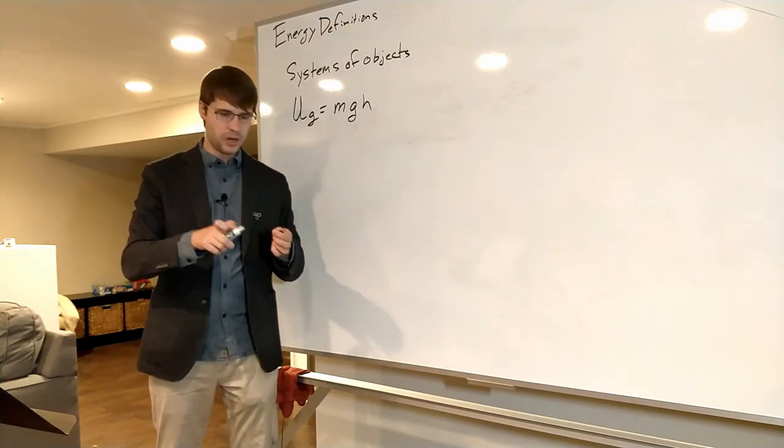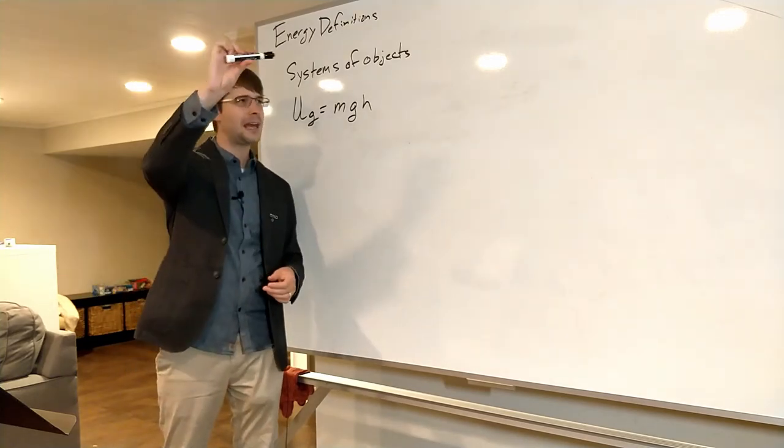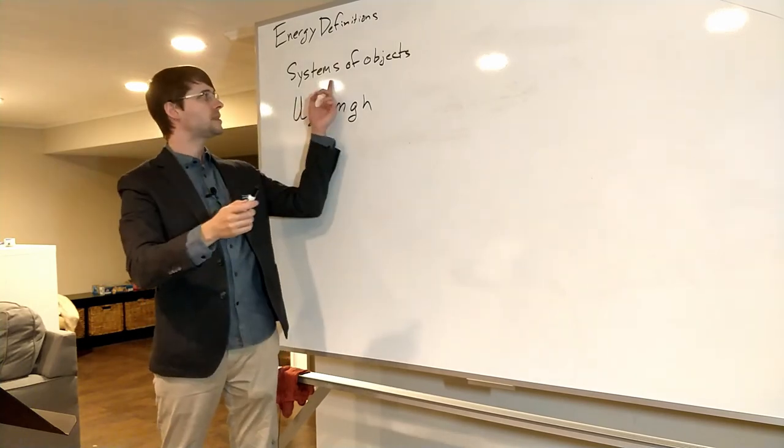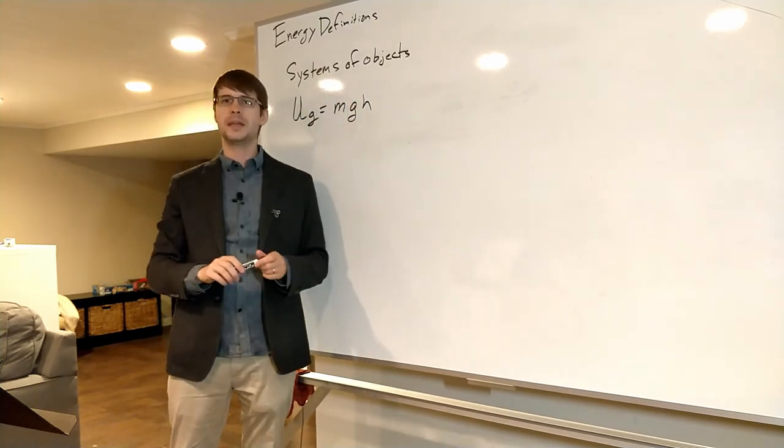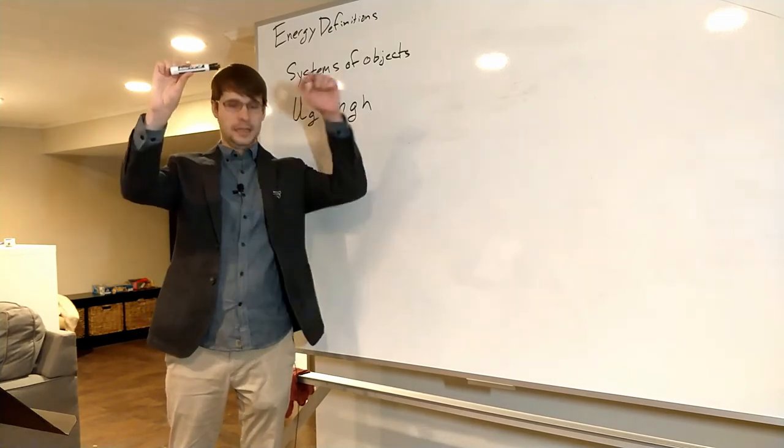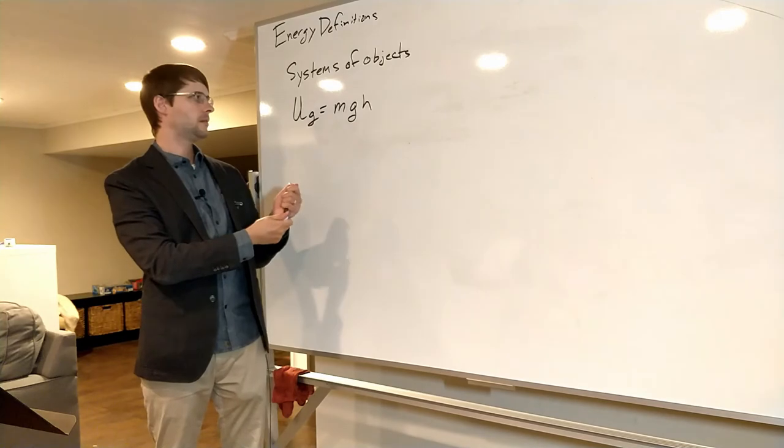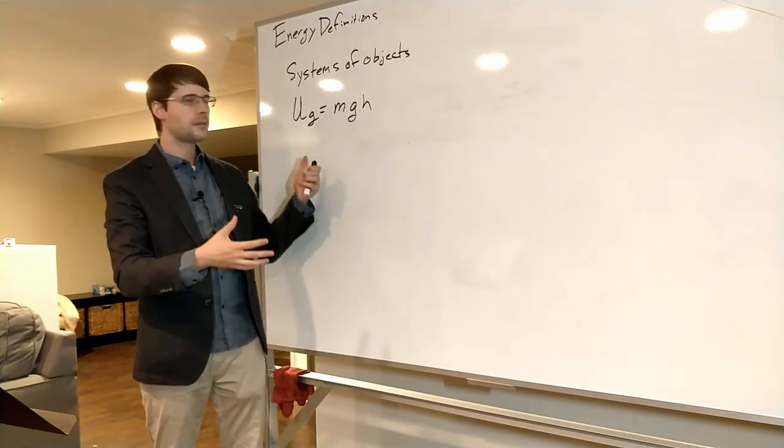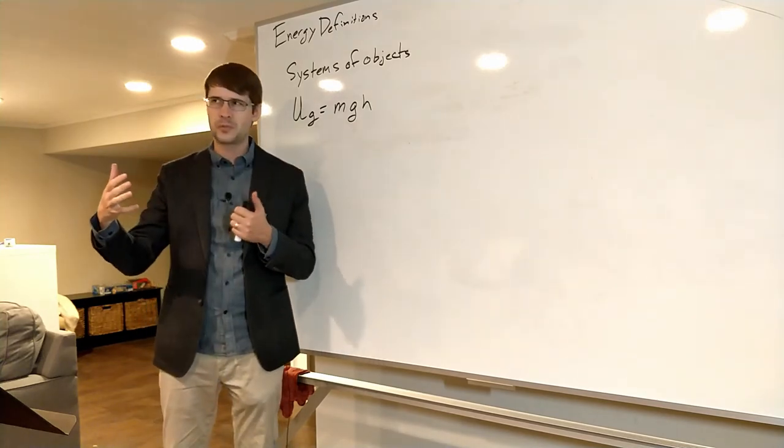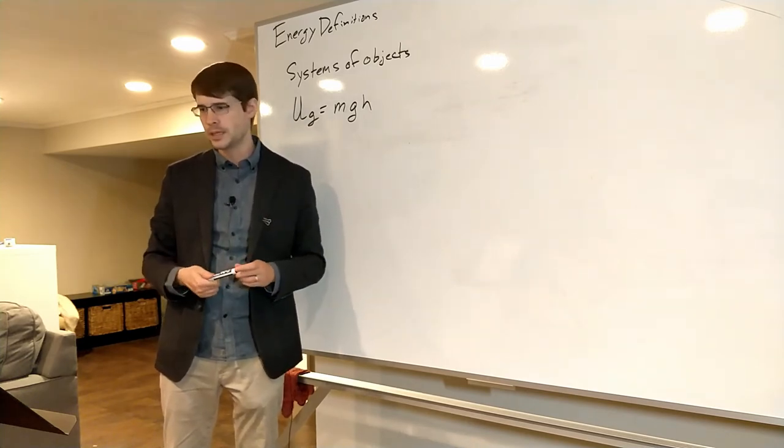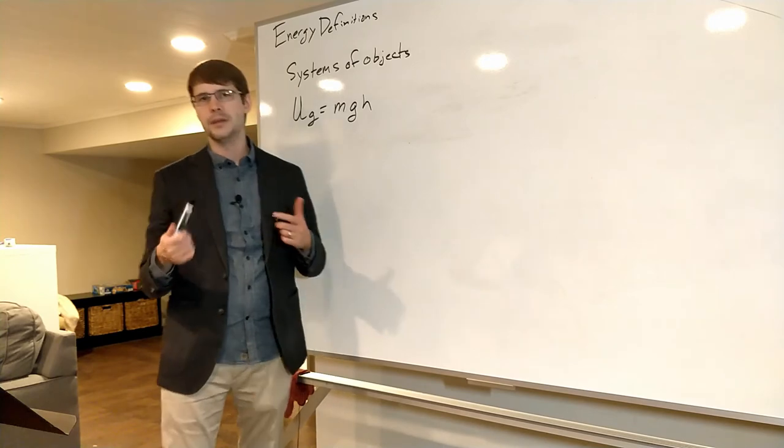Even though it seems like this marker, when I hold it here above the ground, has potential energy, that's not really the case. What is happening is I have a system of objects, and the system is the marker and Mother Earth. So these two together are my system, and together they have gravitational potential energy. It might seem like a trivial distinction, but it's actually a pretty important distinction.